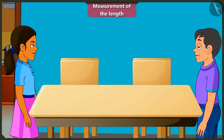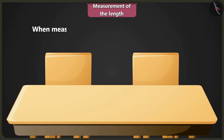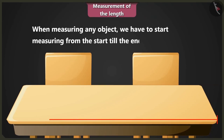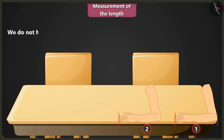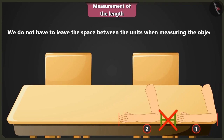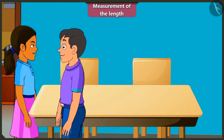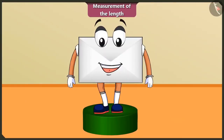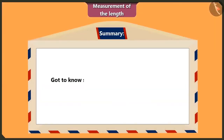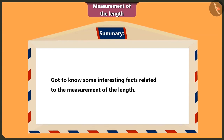Always keep in mind: while measuring the length of any object, always measure from one end to another end of the object. And also make sure that while measuring the length, no space should be left between the units. I will remember that. Okay, let us go and play now. So friends, today we learnt some interesting facts about measurement of length.